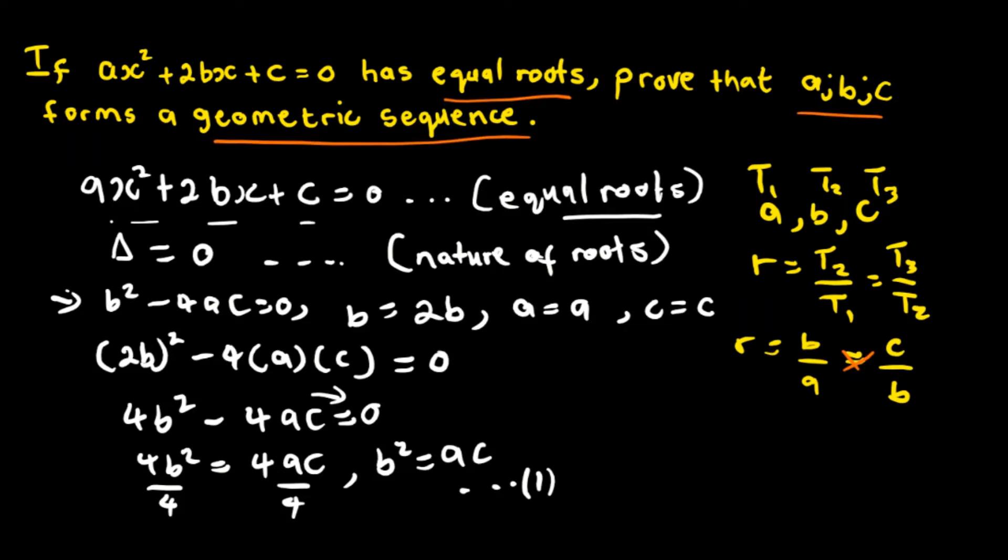From cross multiplication, we get b² = ac. This matches our equation from the discriminant: b² = ac. Therefore, a, b, c forms a geometric sequence.